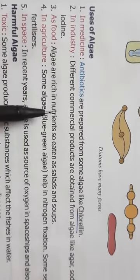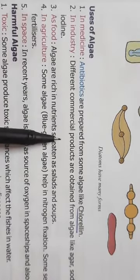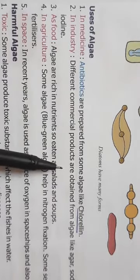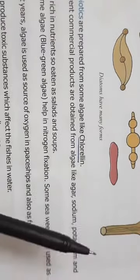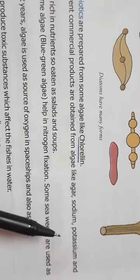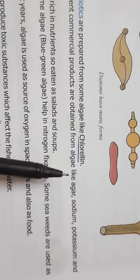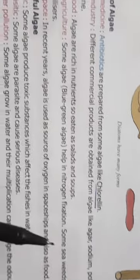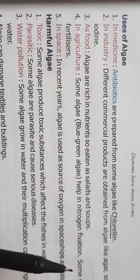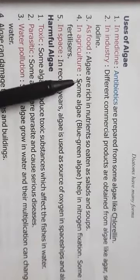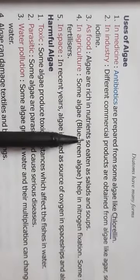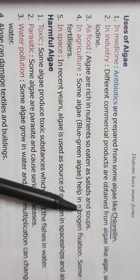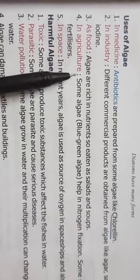Then, in industries, many commercial products are obtained from algae like agar, sodium, potassium, iodine. You have heard about sodium, potassium and iodine. So, many products are made from algae. Then, some of the algae is eaten as food also. Some of them, not all. They are rich in nutrients, so they can be taken with salads and soups.